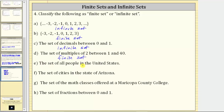E: the set of all people in the United States. While it would take some research and be very difficult to determine, it is possible to determine the exact number of people in the US, and therefore this is an example of a finite set. F: we have the set of cities in the state of Arizona. Similar to E, with some research we could determine the exact number of cities in the state of Arizona. This is an example of a finite set.